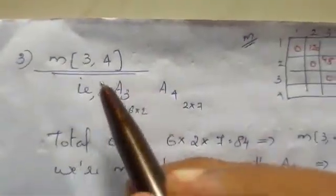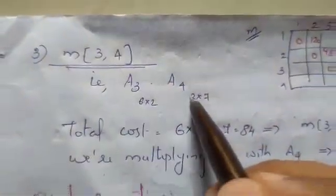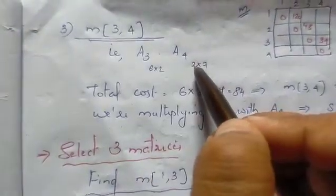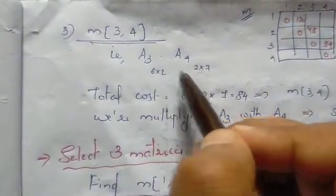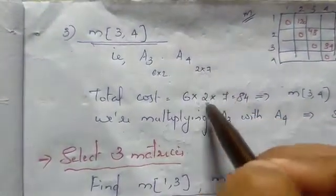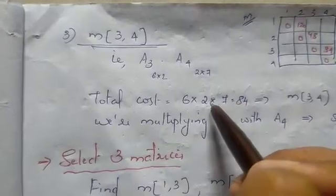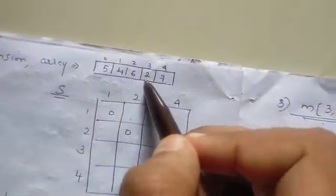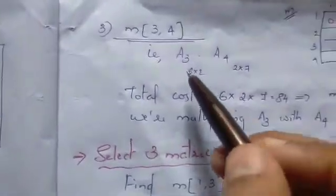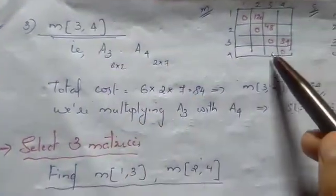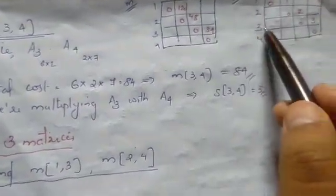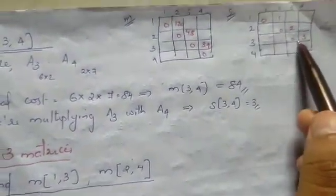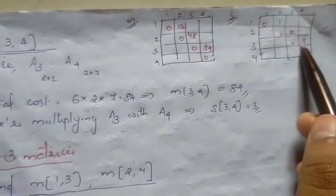M34 is A3 times A4: 6 into 2 into 7, that is 84. So S34 is 3, meaning the split is at index 3.